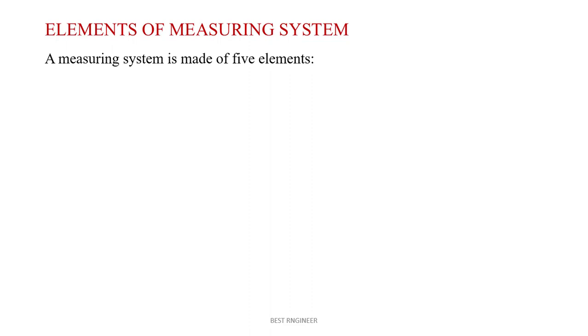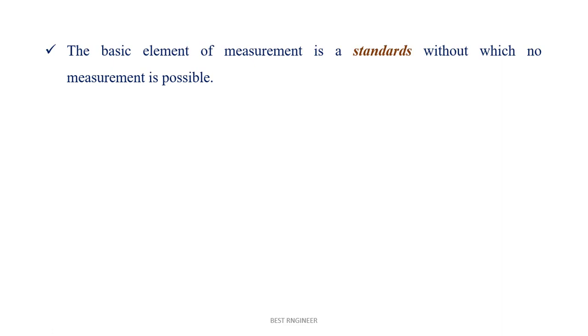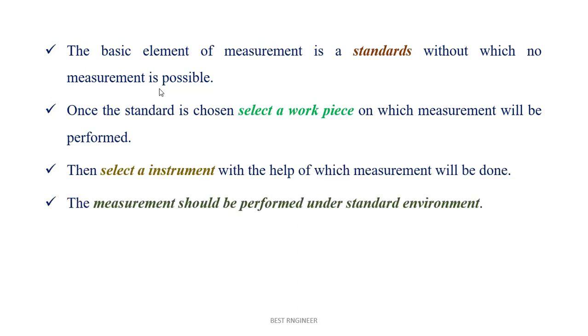The basic element of measurement is a standard without which no measurement is possible. Once the standard is chosen, we have to select the workpiece. Then, select the instrument. Then, measurement should be performed under a standard environment. Finally, a person or mechanism should be involved to measure the object.